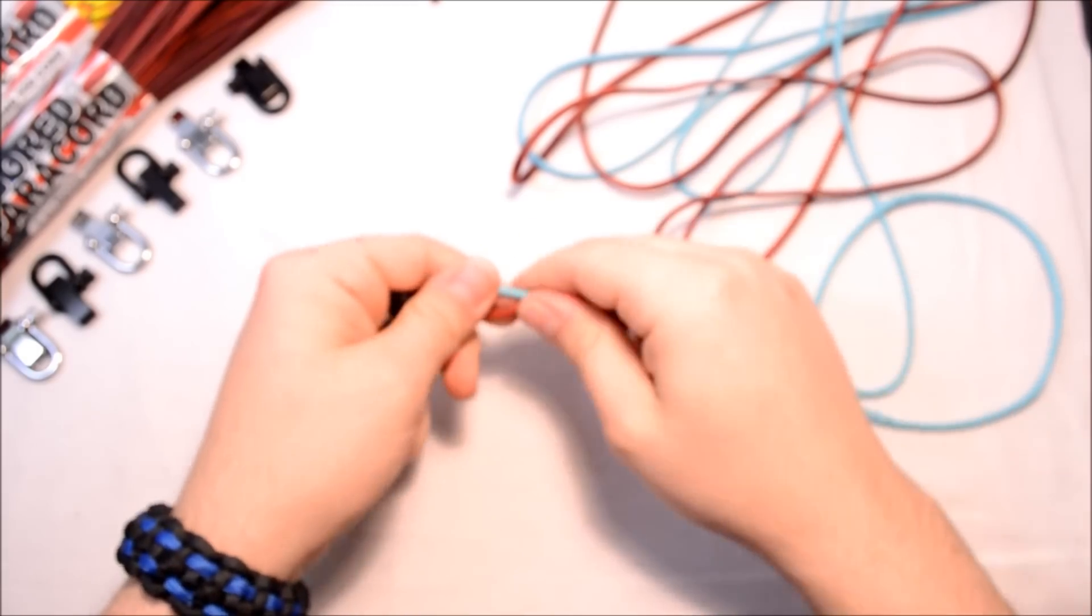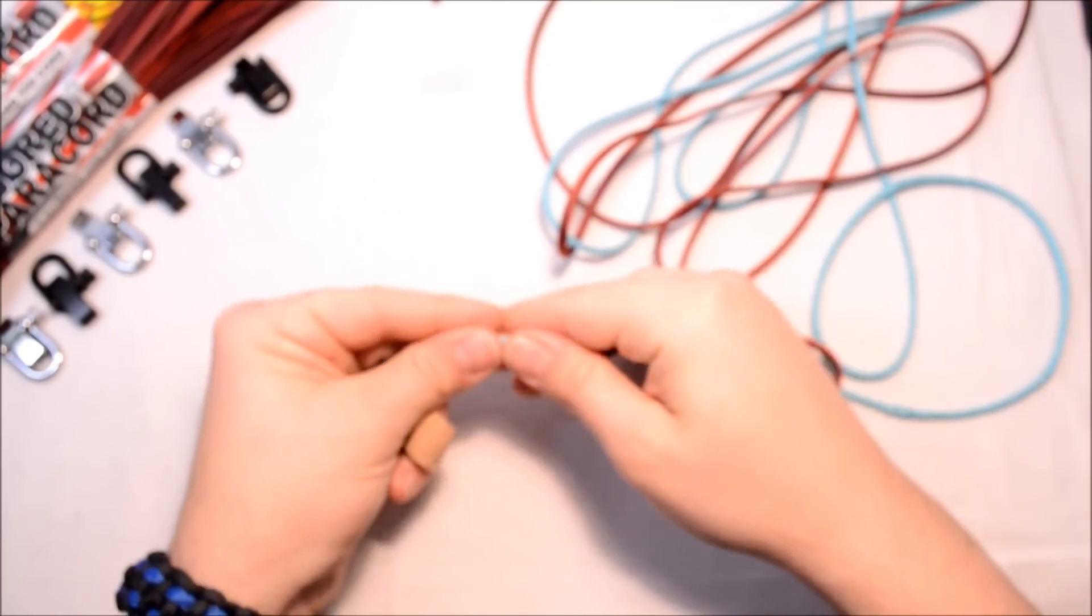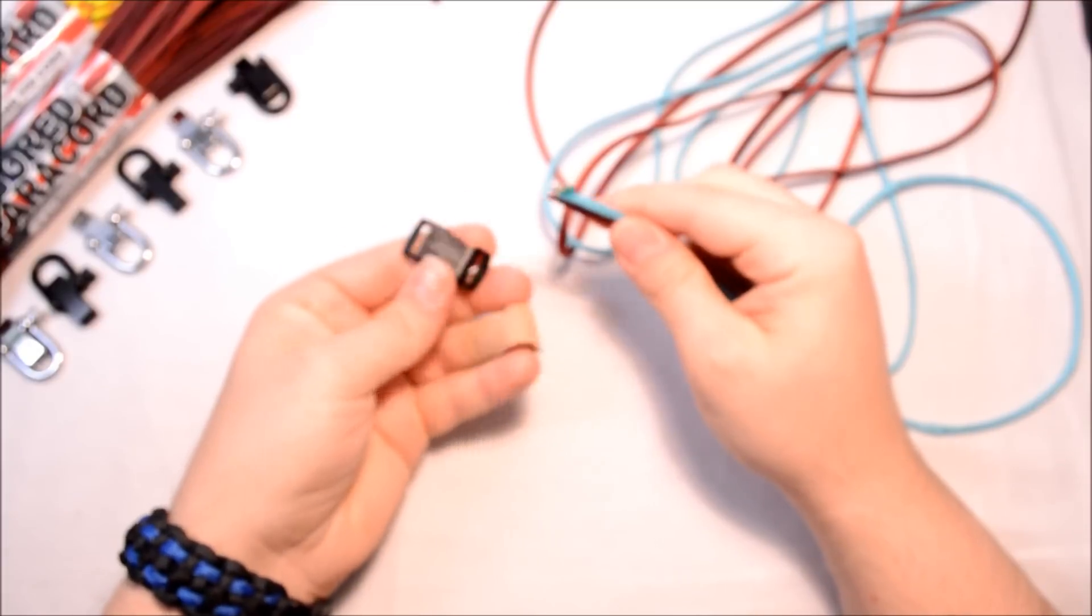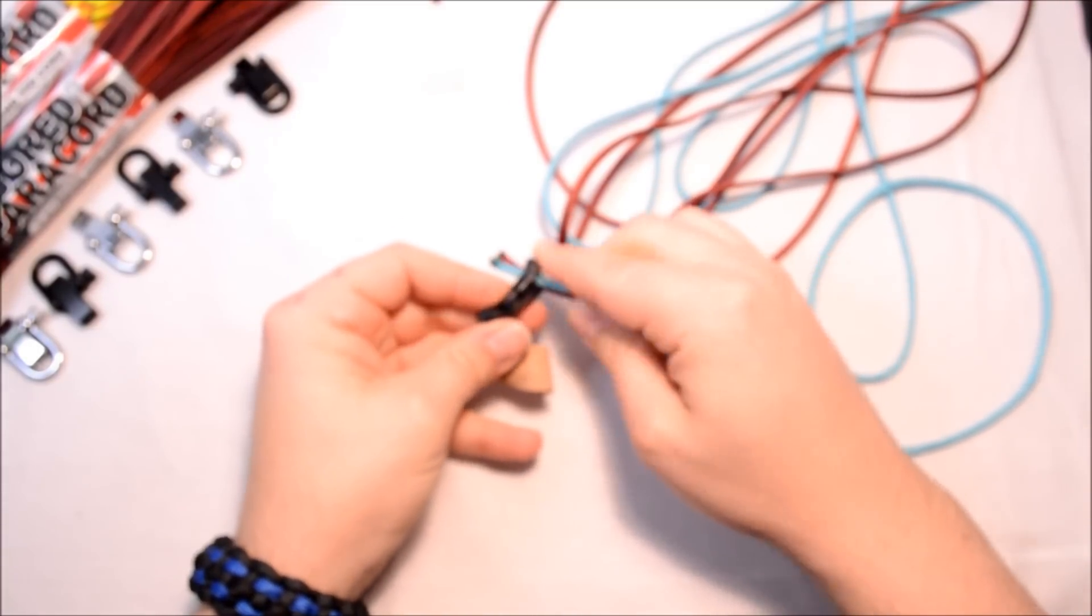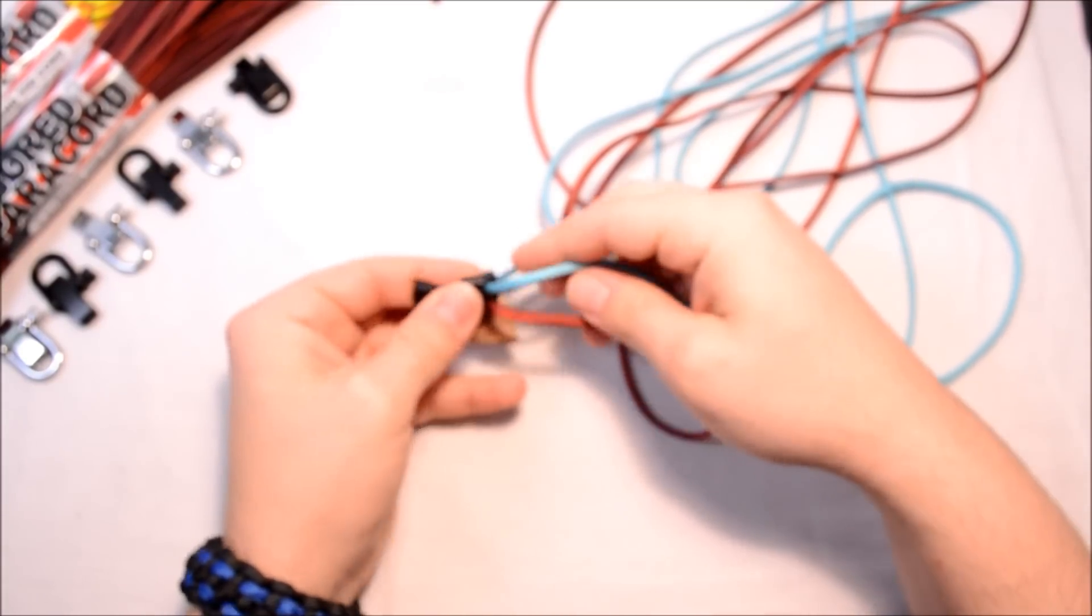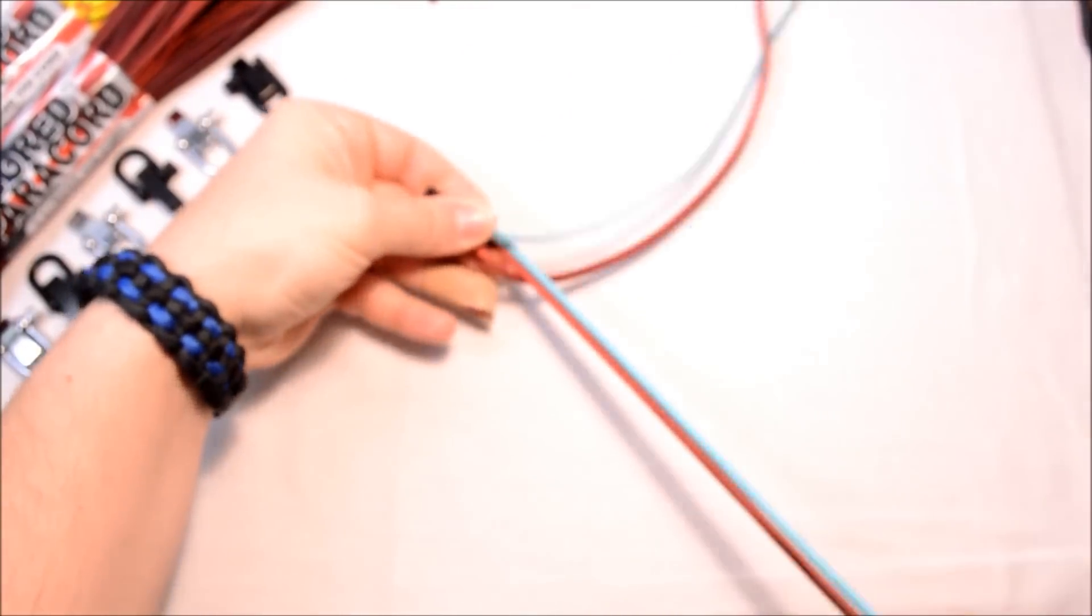Alright, so I've already fused the two ends together, which is right here, and I'm going to take my buckle, take my two ends which are already flattened, and go down through the buckle. And then I'm going to open up the two long ends here, grab hold, and pull on through. Get that out of the way.